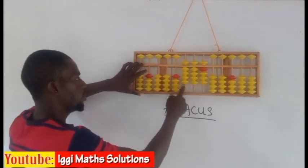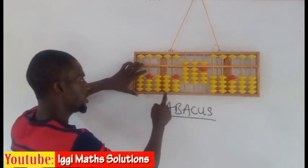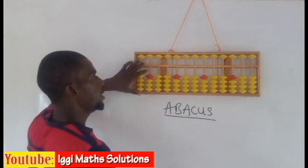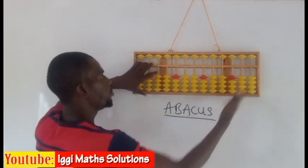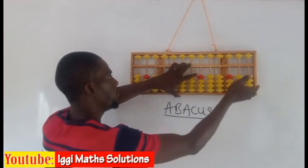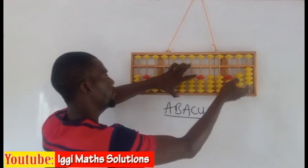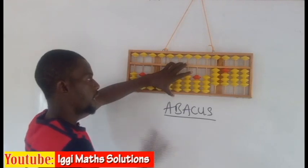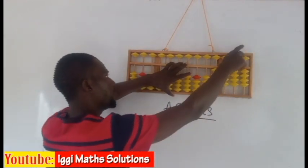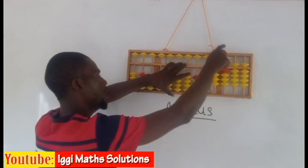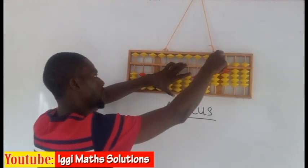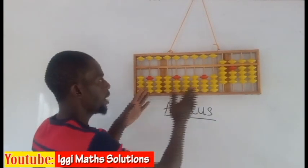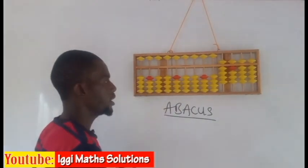This is how the abacus was designed: unit rod, tenth rod, 100, thousands, 10,000 and so on. You can also let the first rod be your unit, so that here you have four, here you have forty, here you have 400, here you have 4,000 and so on. Here you have five, here you have fifty, here you have 500, here you have 5,000 and so on. This is how this type of abacus was designed to represent numbers easily.